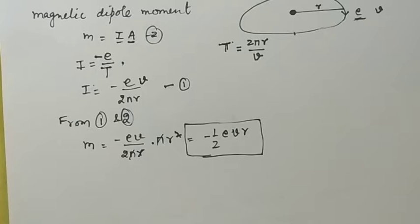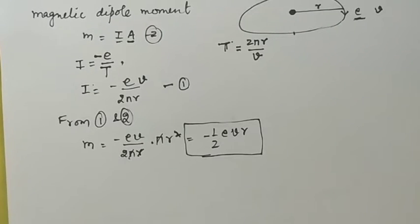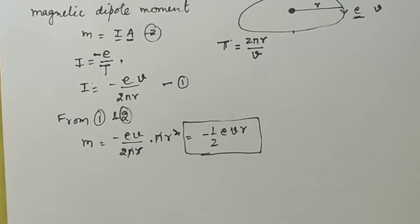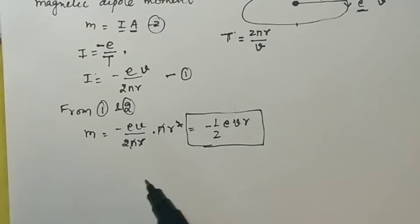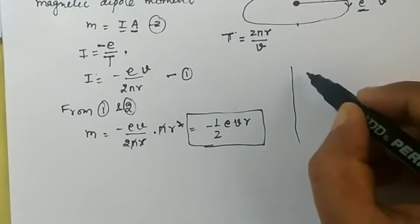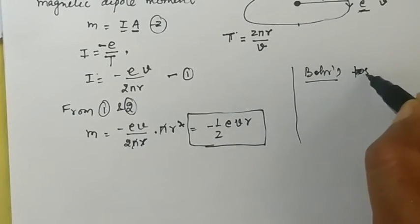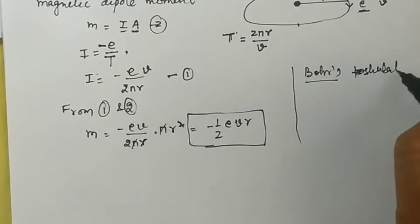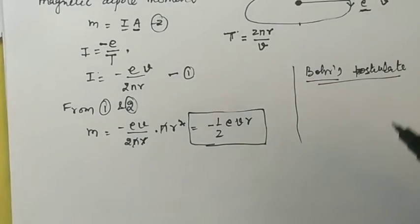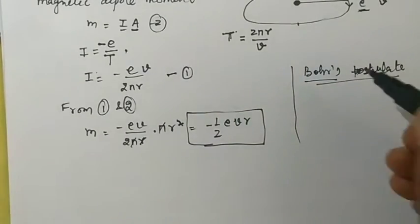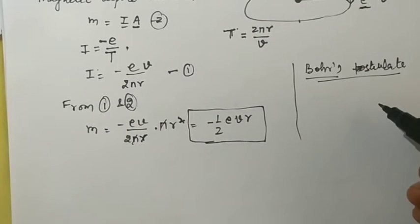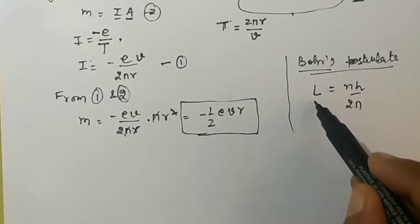Now we add a Bohr concept. According to Bohr's postulate, only those orbits are possible whose angular momentum L is equal to nh/2π.